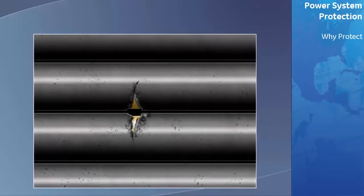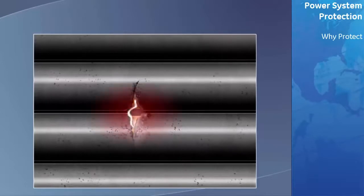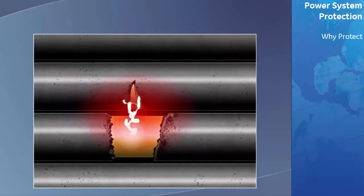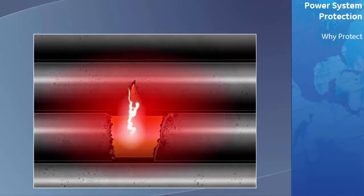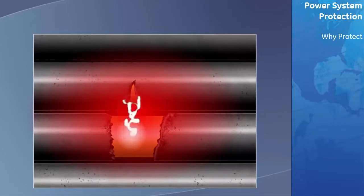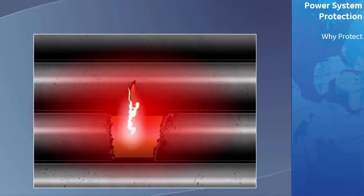If the fault isn't isolated quickly, the fault current will cause the conductors to heat. As the temperature of the conductor rises, the damage will spread to the surrounding insulation, causing it to fail, and the fault current will increase even further. As the level of fault current increases, the temperature will rise to a level that will melt the conductors and burn the steel laminations, resulting in catastrophic damage to this inadequately protected transformer.